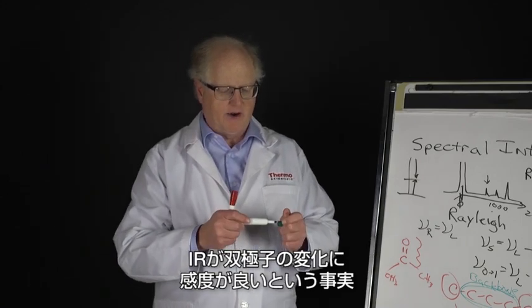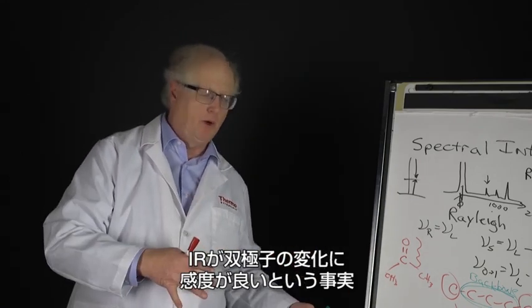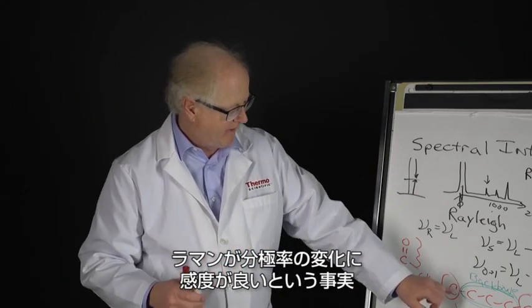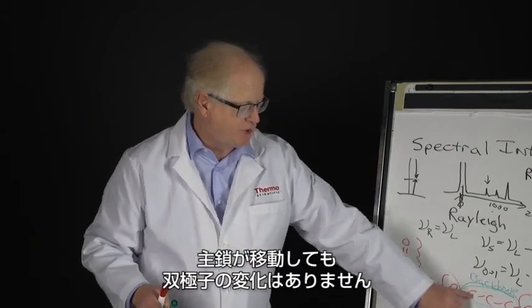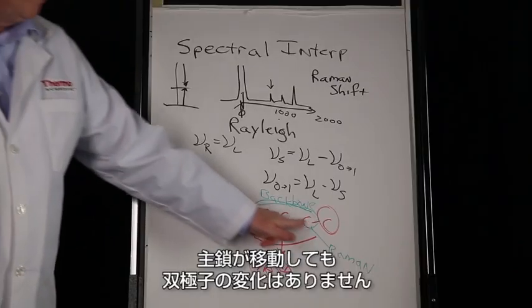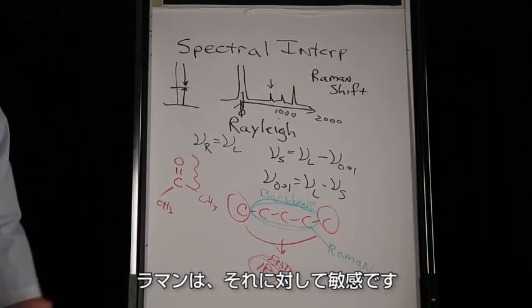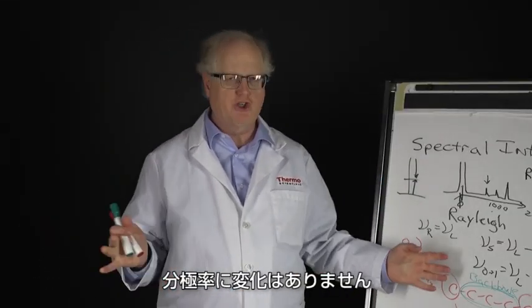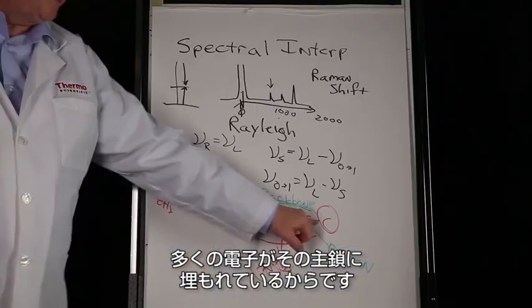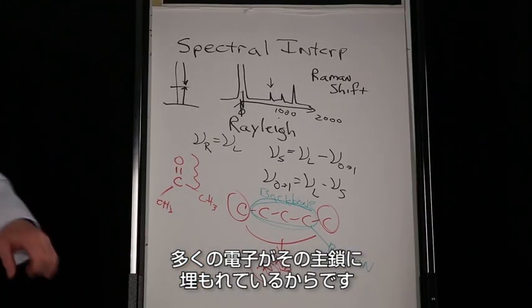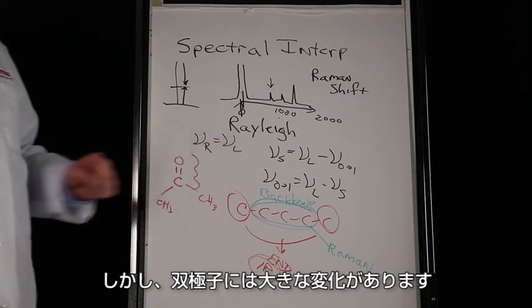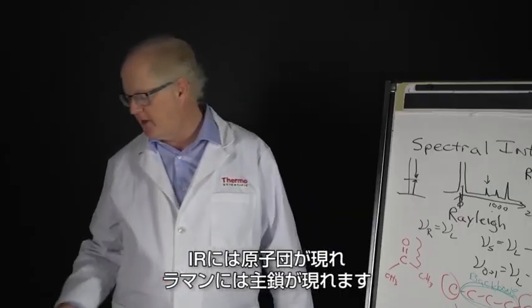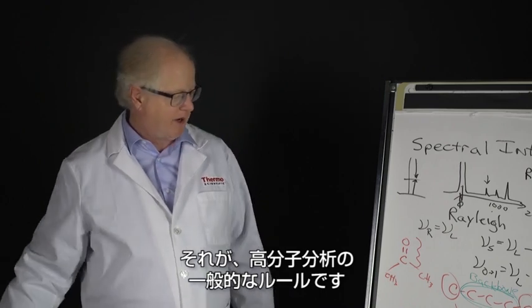This has to do with the difference in the selection rules. The fact that IR is more sensitive to change in dipole, Raman is more sensitive to a change in polarizability. There isn't much dipole change when that backbone moves. The Raman is sensitive to that. When the end groups change, vibrate, whatever, there isn't much change in the polarizability because a lot of the electrons are buried in that backbone, but there's a big change in the dipole. So you see the end groups in the IR, the backbone in Raman. That's a general rule for polymer analysis.